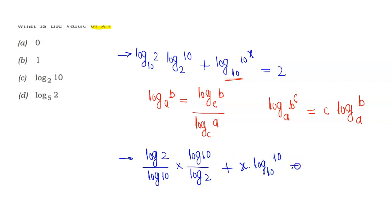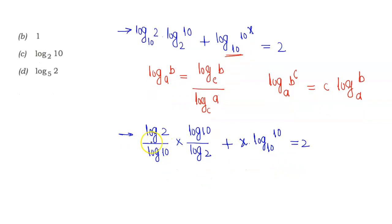The terms cancel out - this equals 1. So we get 1 plus x equals 2.